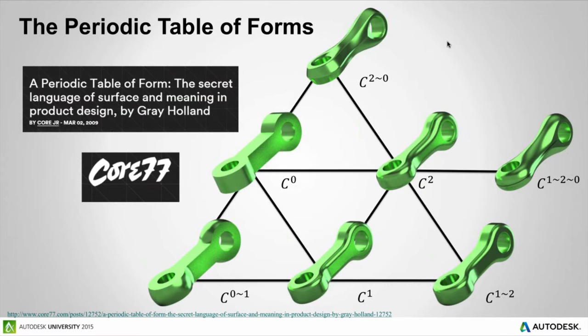Let's go back to the periodic table of form. C0 is just simple extrusions, and C1 is extrusions with fillets. I'd challenge you to look at this image and ask: which one looks stronger? Which one looks more expensive? Which might look like it's going to last longer? They all do the same function, but the design makes you think differently. C1-2-0 to me looks more elegant and refined, whereas C1 or C0-1 might look more rugged — something that would sit on a construction site.